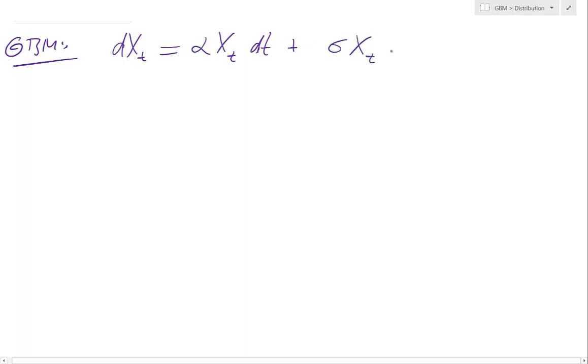So let's just start. So a geometric Brownian motion. It would be that dXt equals alpha Xt dt plus sigma Xt dWt. Okay, so that's the Ito representation.